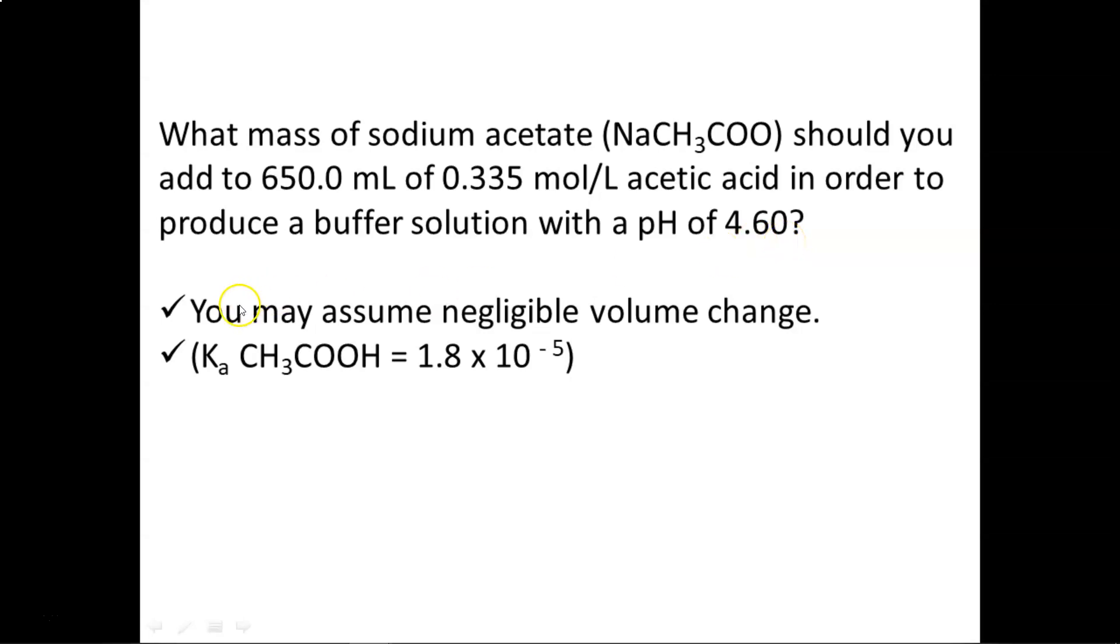Again, like the previous example, you may assume negligible volume change, meaning that when I dump this powder into this acetic acid, the volume of 650 milliliters should not change significantly. It then goes on to say that the Ka value for the acetic acid is 1.8 times 10 to the power negative 5, and that tells us how well the acetic acid will break up and release its H plus ions.